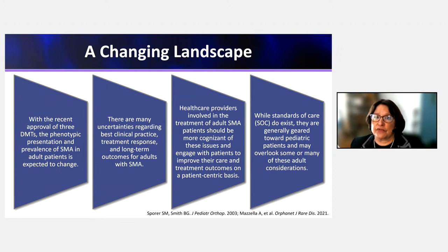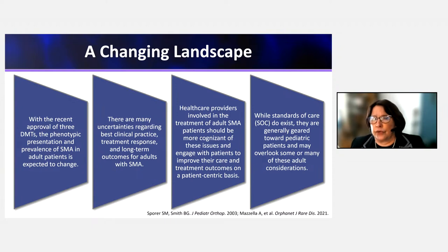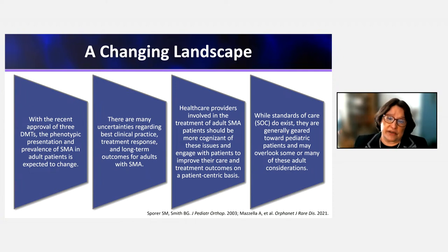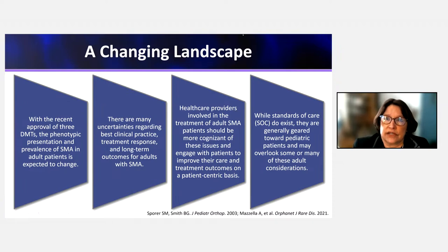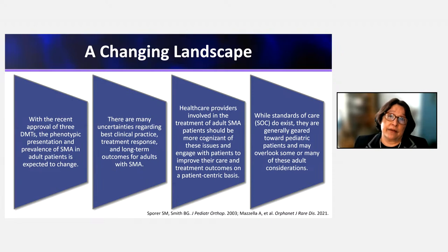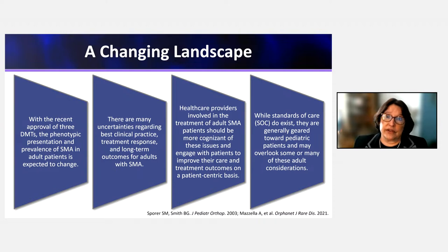Healthcare providers treating adult SMA should be more cognizant of these issues and engage with patients to improve care on a patient-centric basis. It's important to know what activities and mobility are most meaningful to individual patients so that care can be optimized for better quality of life. The current standards of care aren't really geared toward adult patients and don't cover many issues affecting adults — those need to be developed.